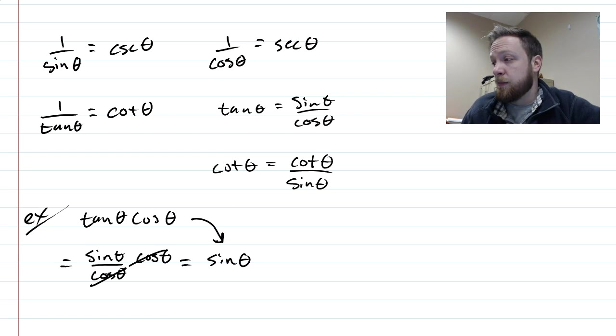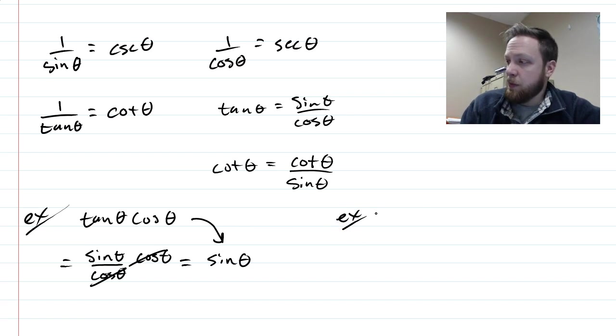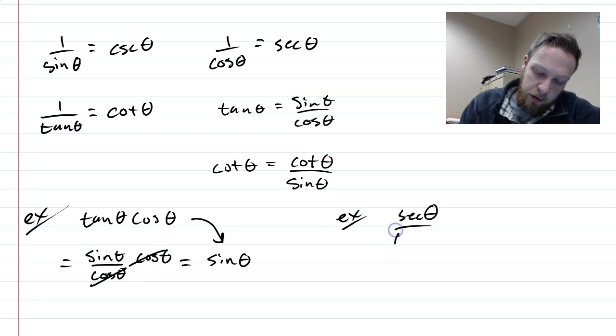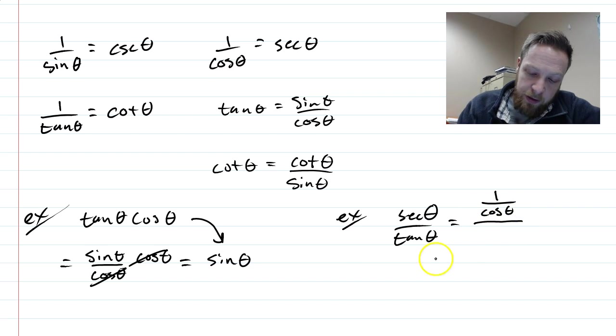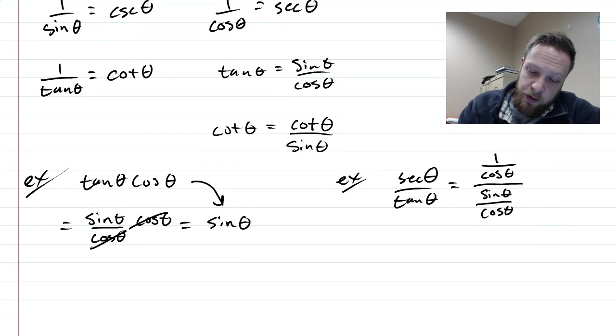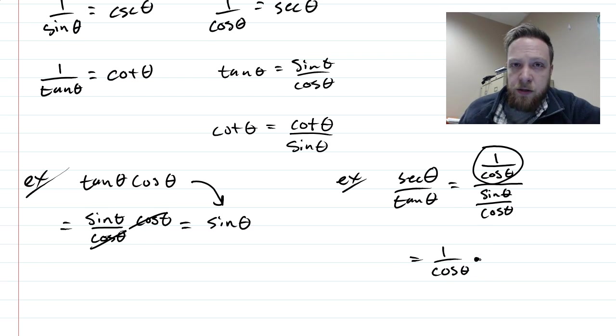Another example might be like sec θ over tan θ. So our strategy today is to rewrite in terms of sine and cosine. We are going to have secant be written as 1 over cos θ, and then tangent will be sin θ all over cos θ. We have a compound fraction now.